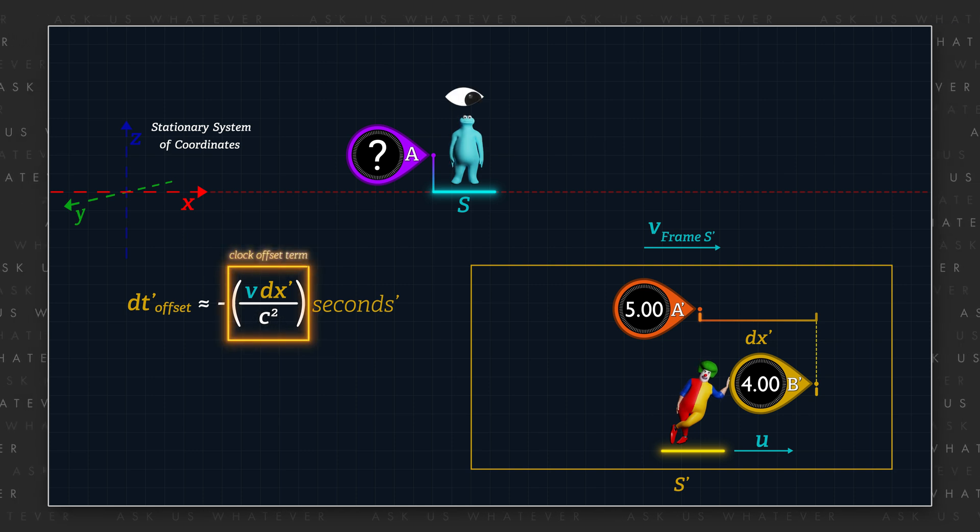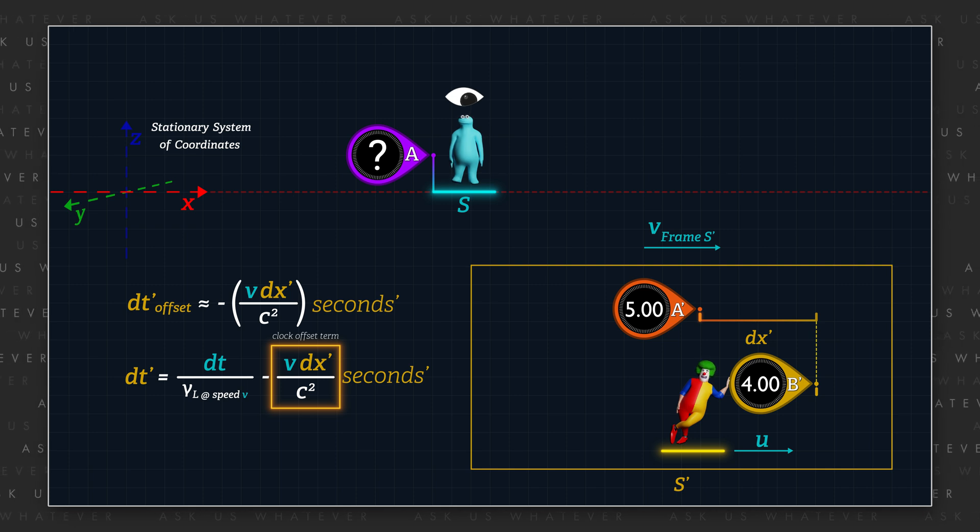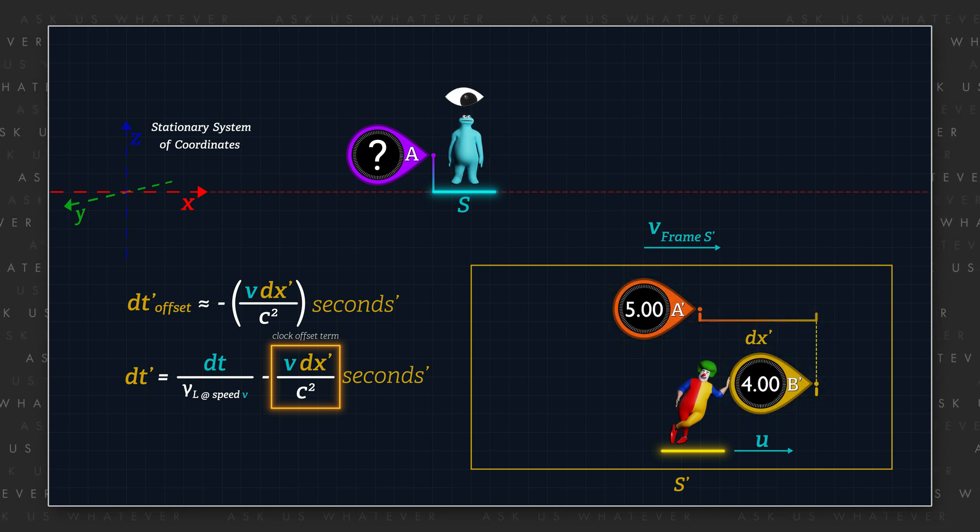The term on the right is the frame S' clock offset term of the Lorentz DT' transformation, which is also the amount by which Einstein clock synchronization causes two clocks separated by distance DX prime to differ in their time readings.